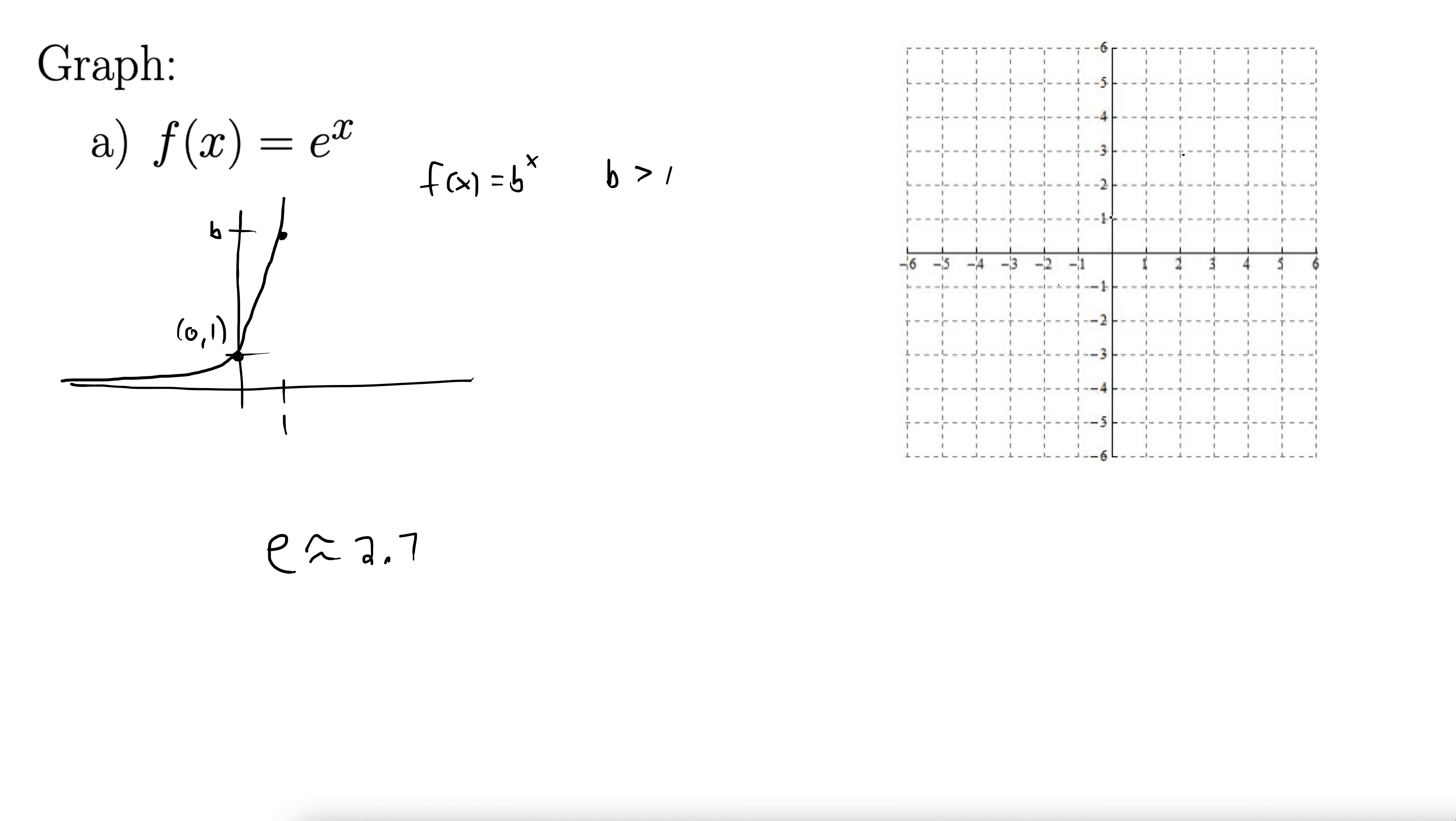So here, graphing e to the x, we go through the anchor point 0, 1, and then by the time we get over to 1 on the x-axis, we are up to 2.7 or so on the y-axis. So here's e right there. And then it hugs along the x-axis, it does not touch it, but it becomes asymptotically close, and then it blows up here and off it goes to infinity. So e to the x looks like any other exponential. It just goes through the point 1, e, which is about 1, 2.7.